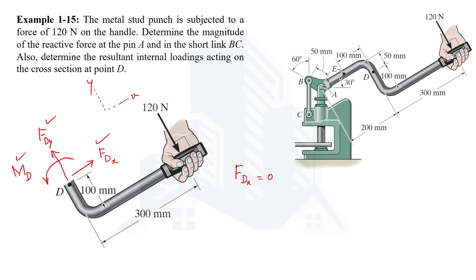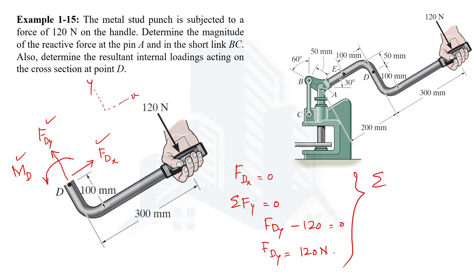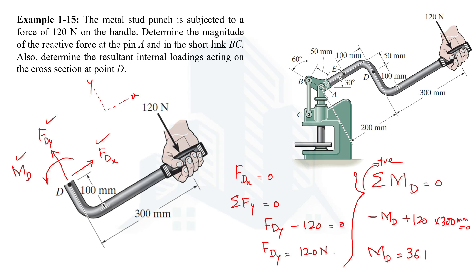In the Y direction there is only one force, which is 120 N. Using the second condition of equilibrium — ΣFy = 0 — FDY is upward (positive) and 120 N is downward (negative), giving FDY = 120 N. For the moment, using ΣM = 0 at point D with clockwise positive: negative MD plus 120 N × 30 mm = 0, so MD = 3600 N·mm = 3.6 N·m. Wait — MD = 120 × 30 mm = 3600 N·mm = 36 N·m is stated, so MD = 36 N·m. These are the resultant internal loadings at point D.